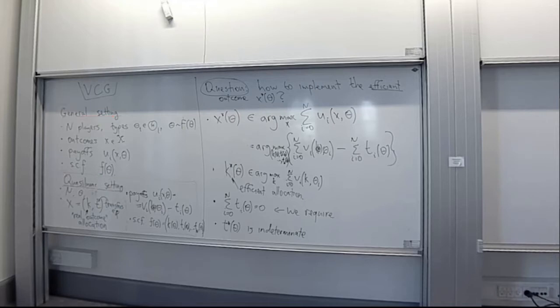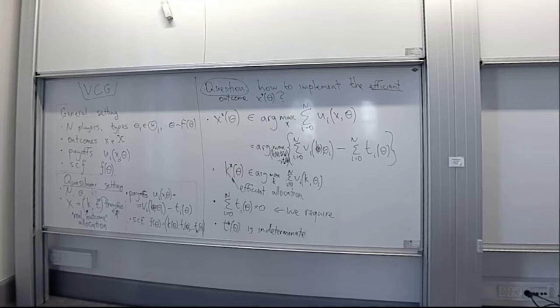This week we will consider a slightly different question. Namely, we will ask: what if our desired social choice function is not immediately implementable, but we have some extra aspect of the environment that we can tap into — namely, we have access to monetary transfers to incentivize players. So we introduce what I will refer to as the quasi-linear setting.